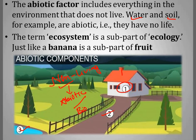Bio means life, so biotic refers to living things. The ecosystem is a sub-part of ecology. To understand this, we can use an analogy — think of fruit: fruit is a broad category.